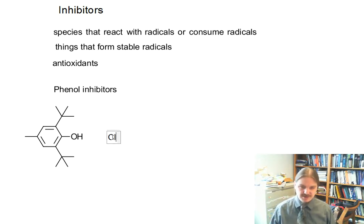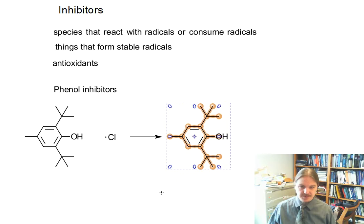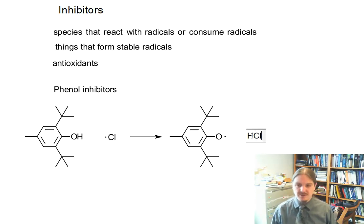So generally what happens here is if we have some kind of radical that's been generated in an initiation step, like the chlorine radical, it can react with a phenolic inhibitor like BHT and produce the BHT phenoxy radical and hydrogen chloride.